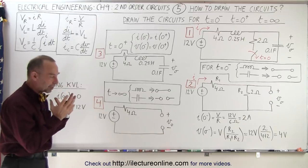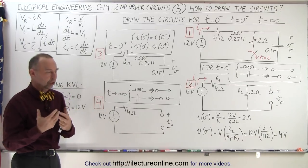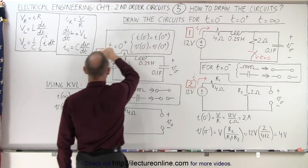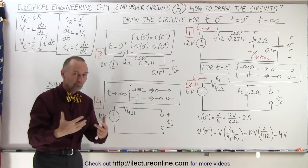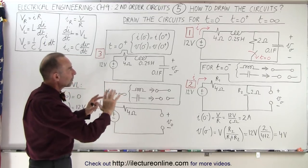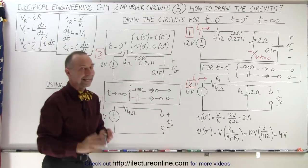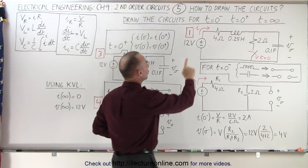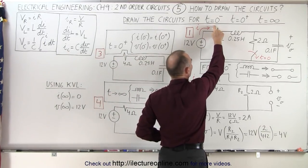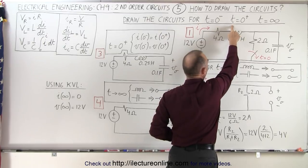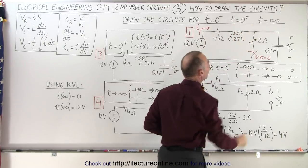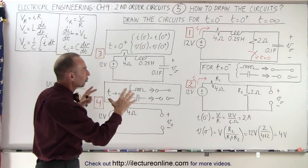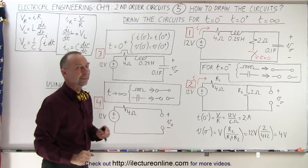Next, you need to figure out how to draw the circuits. You start with the original circuit — notice the numbers 1, 2, 3, and 4. You need to draw three more circuits: one for the time just before zero, one for the time just after zero, and one for when time approaches infinity, representing those three moments in time.